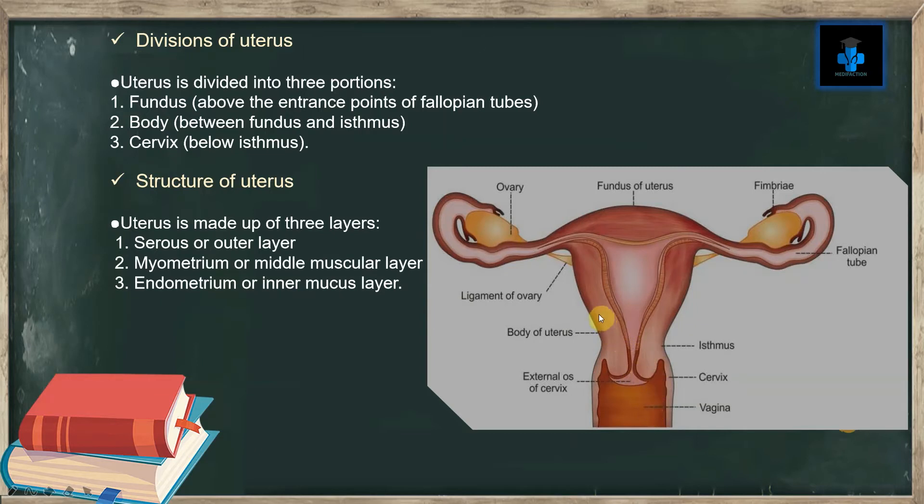The uterus is made up of three layers. First is the serous or outer layer. Second is the myometrium or middle muscular layer. Third is the endometrium or inner mucous layer.